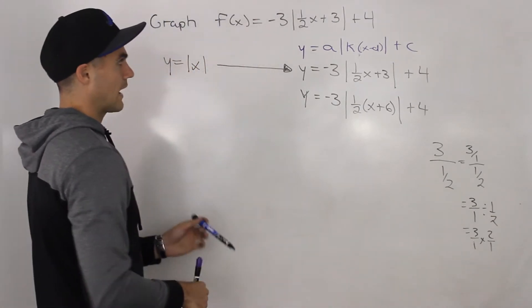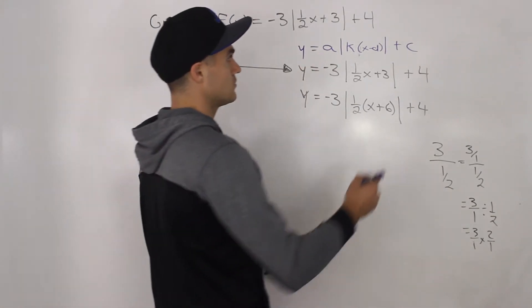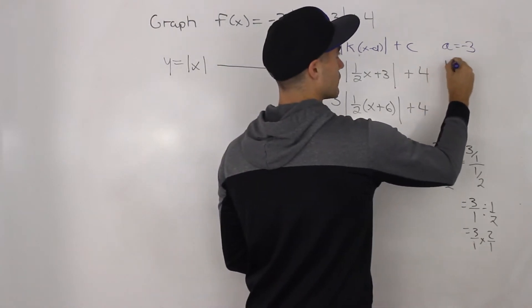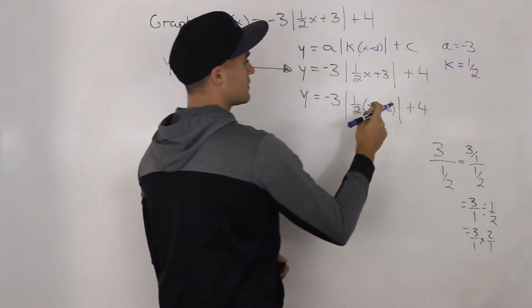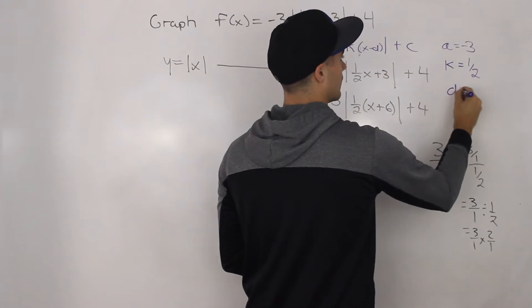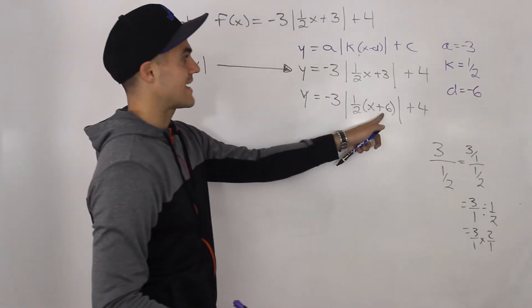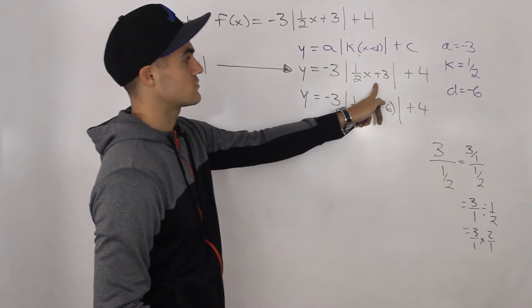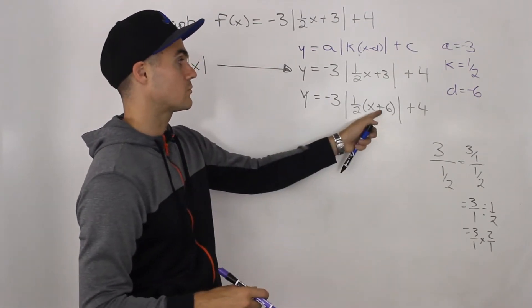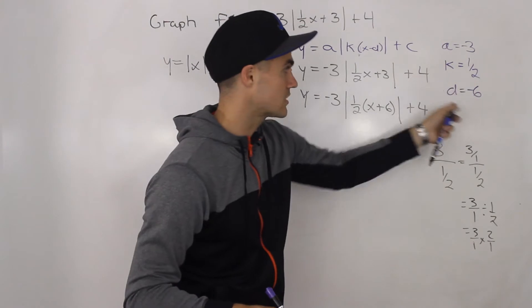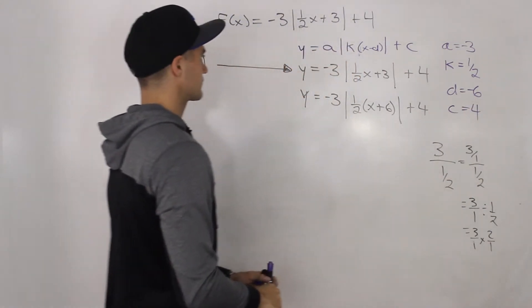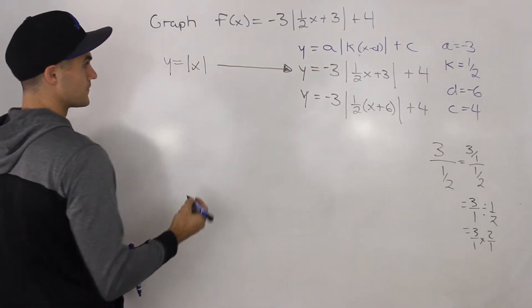Now we can identify all our transformation values. The a value is negative three, the k value is one half, the d value is negative six — remember you switch the sign. The trickiest part is knowing the d value is negative six, not negative three, because you must factor out the k value first. And the c value is four.